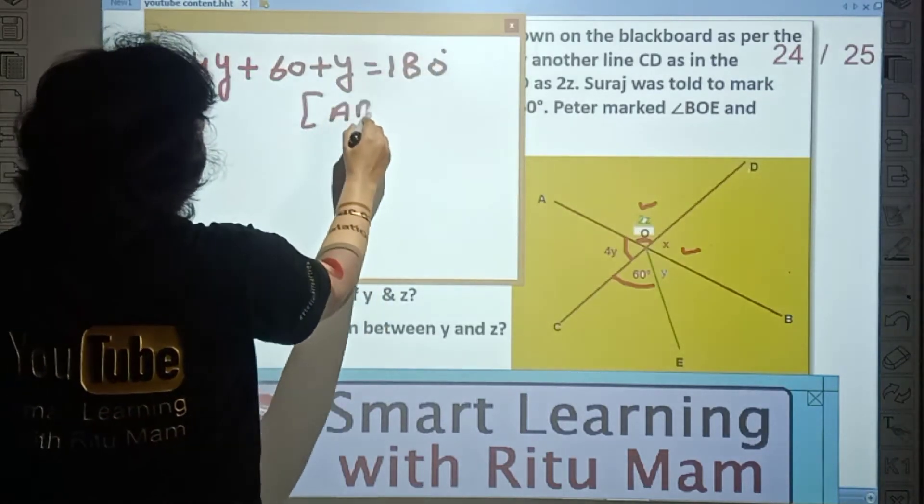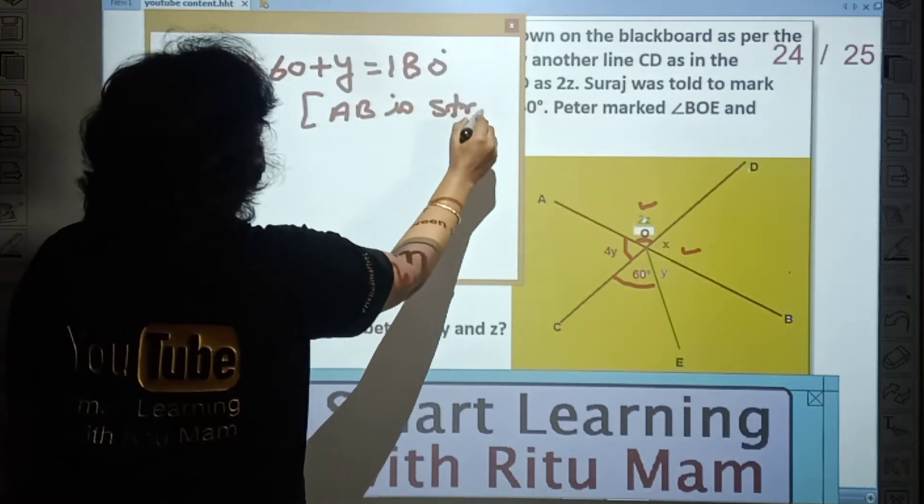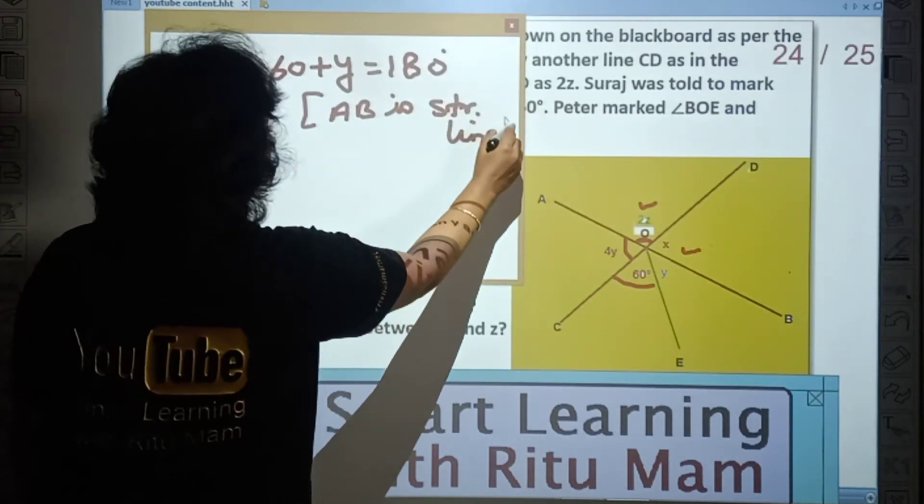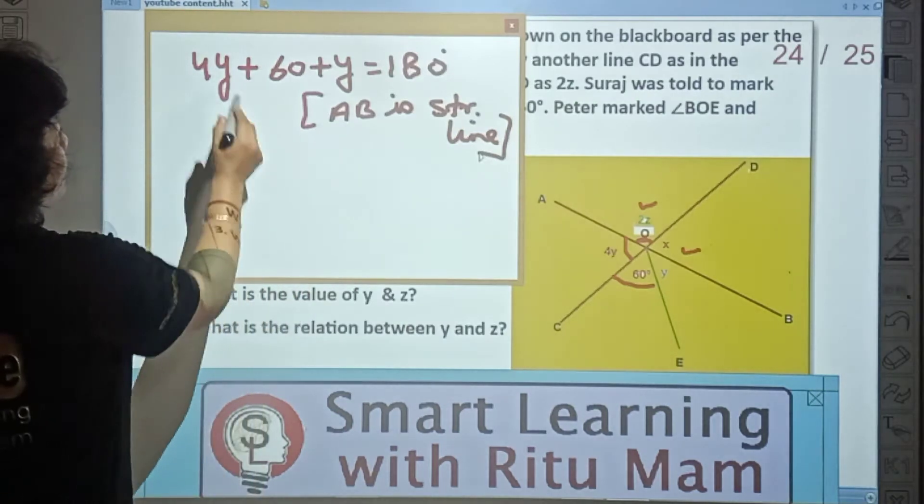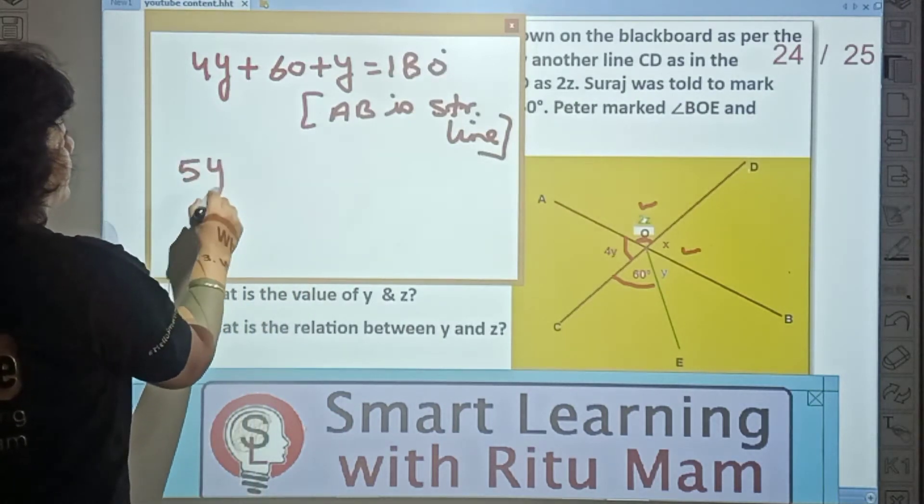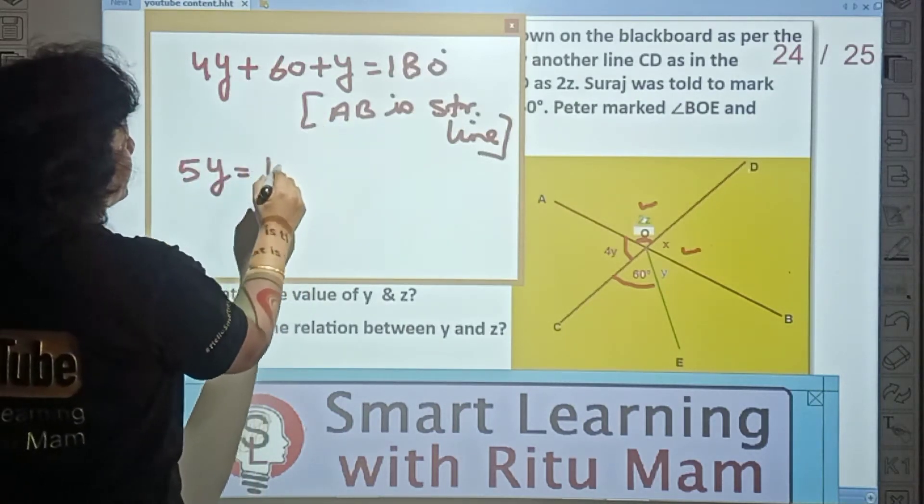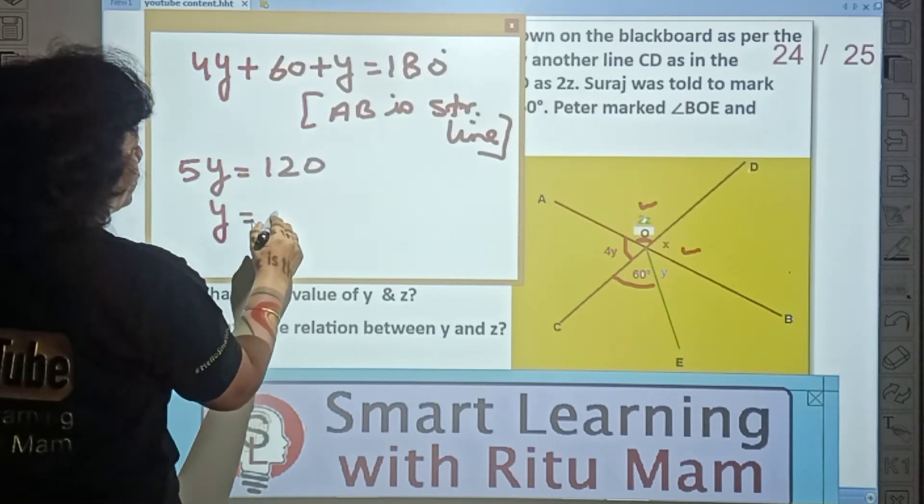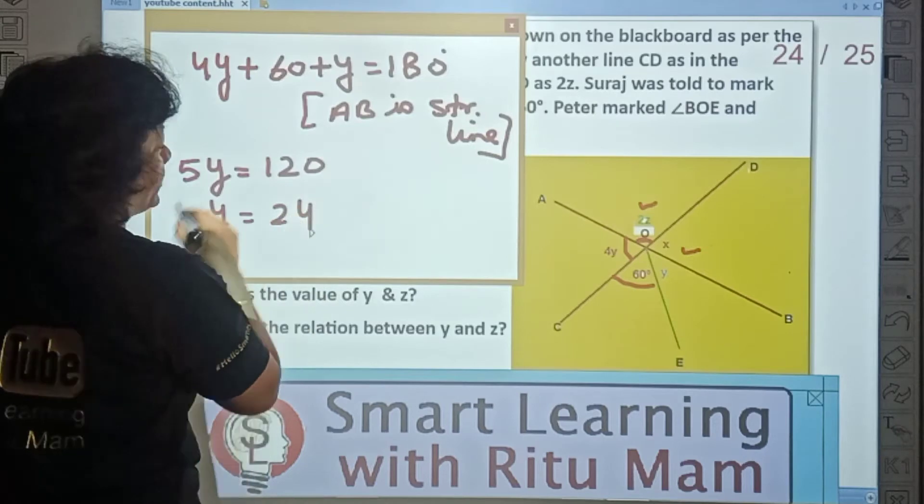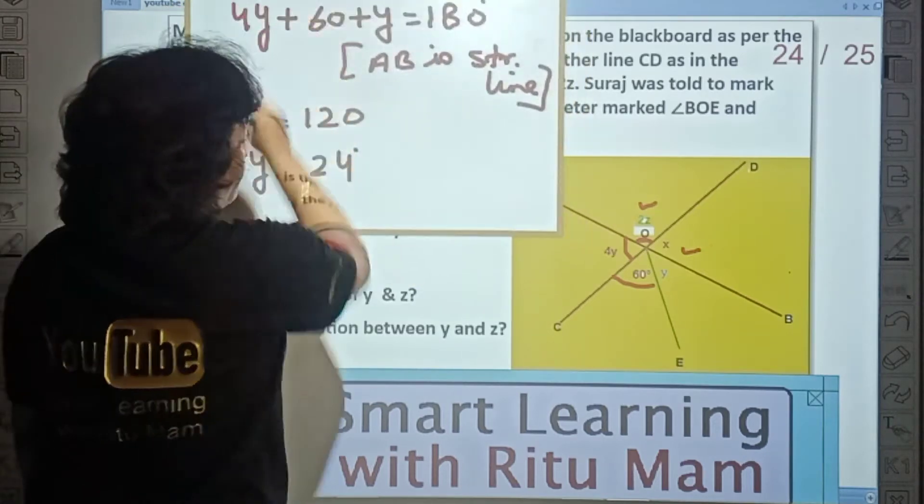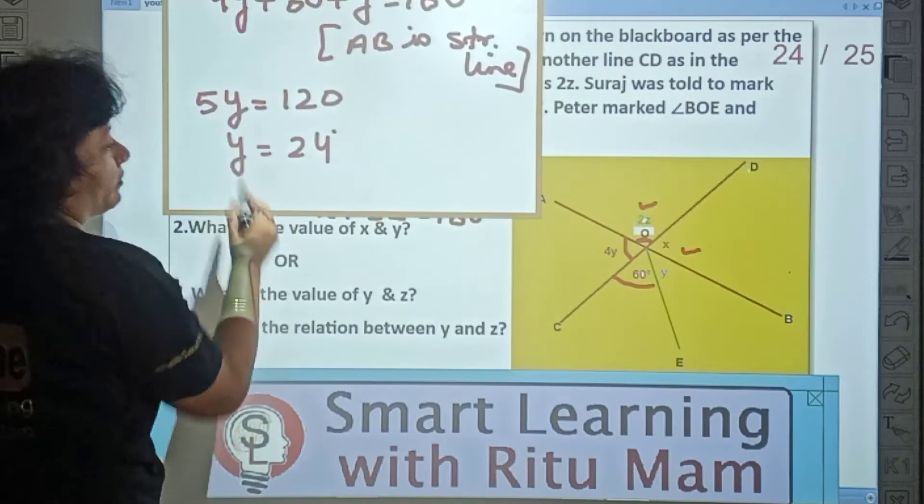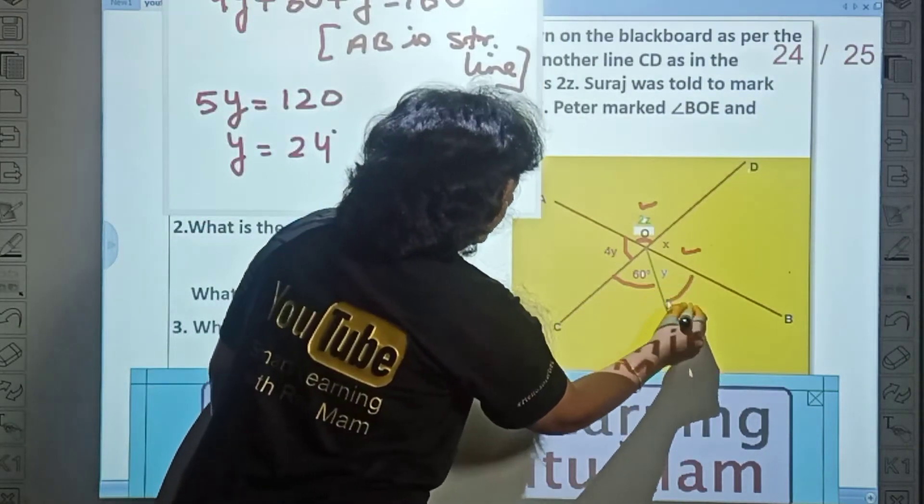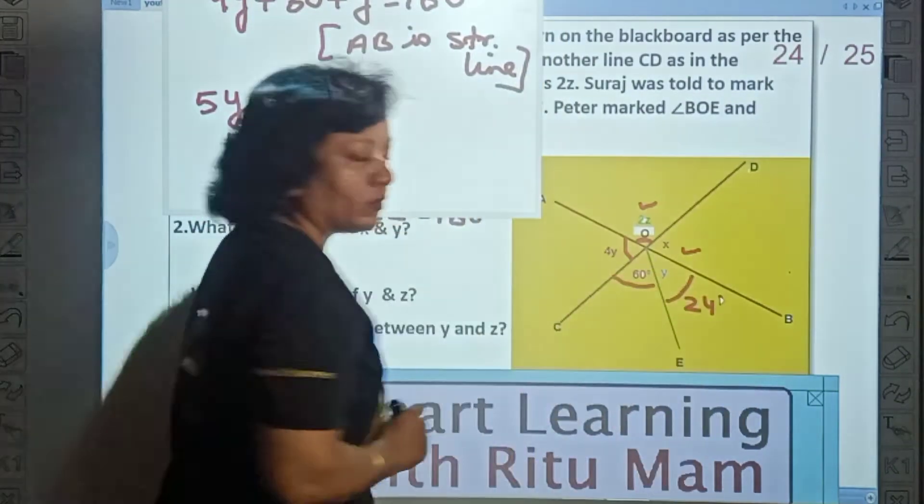So 4Y plus 60 plus Y equal to 180 because AB is a straight line. So let's solve. 5Y equal to 120 after subtracting 60. And Y equal to divide by 5, which is 24. So we have the value of Y as 24.